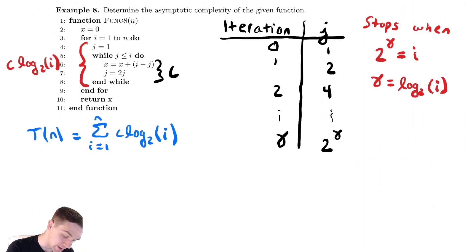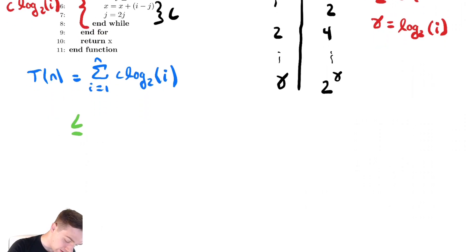So, let's bound it above. To bound it above, we take each term of the summation and replace it with the largest term. In this case, that's going to be c log base 2 of n. After having done that, we have a fixed thing, c log base 2 of n, that we're adding every fixed number of times, n times.